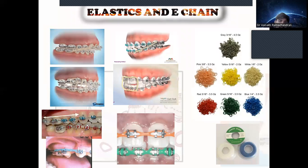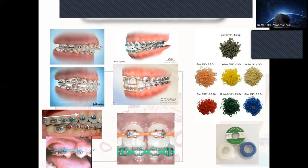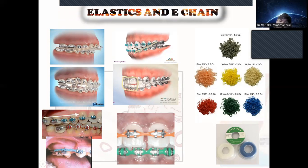Other active components include elastics and elastic chains (e-chains). E-chains are mainly used for space closure — such as extraction space closure. Elastics can also be used for different purposes: Class II or Class III elastics are used for correcting Class II and Class III malocclusions, and settling elastics are used in finishing.